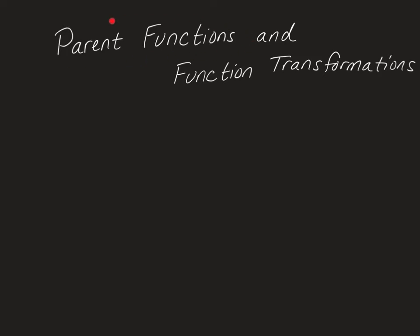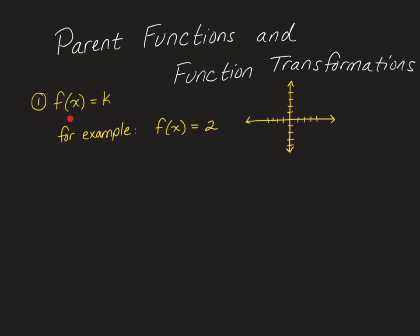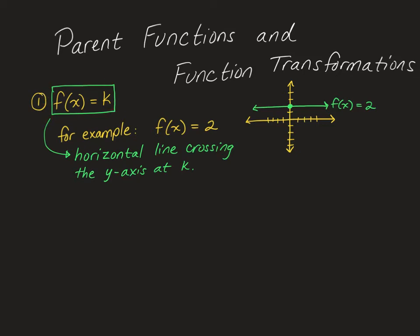I'm going to start with all of the different parent functions that are out there. My first parent function is f of x equals some constant k. For example, if you had f of x equals 2, that would be a horizontal line crossing at 2. It doesn't matter what the input is — it could be negative 100, positive 100, or 0 — the output is always going to be 2. So f of x equals k is always a horizontal line crossing the y-axis at k.